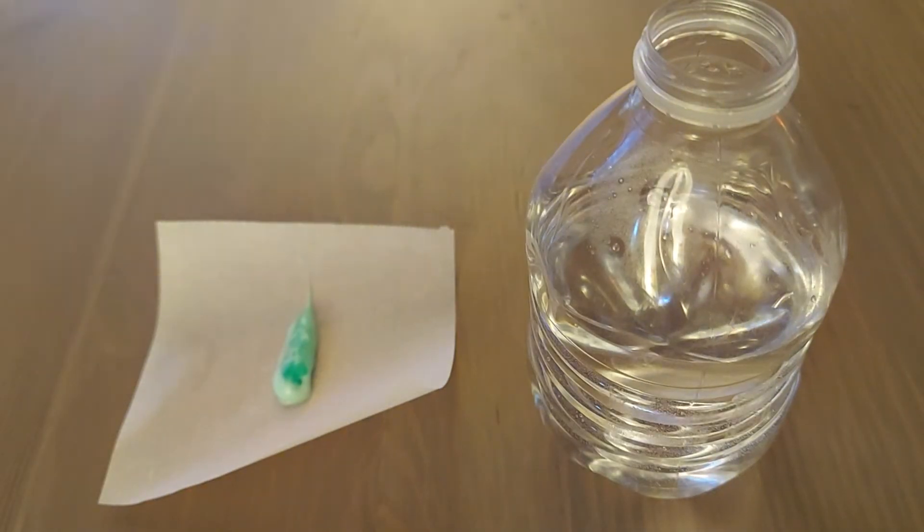Also, we know that toothpaste oftentimes has smell. It has like a minty smell to it. What other property words can we use to describe toothpaste? Think about when you brush your teeth before you put the water on top of your toothbrush. You can pause this video and write down your thoughts in your notebook or on your Google slide.